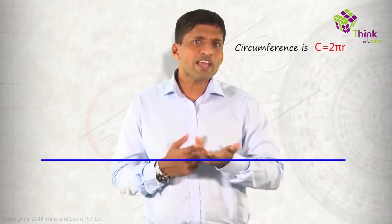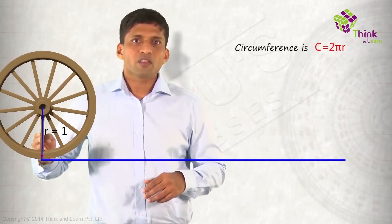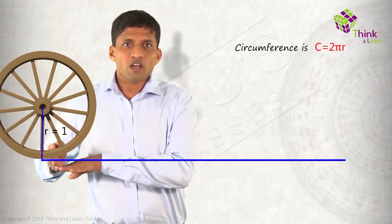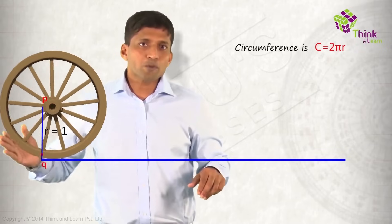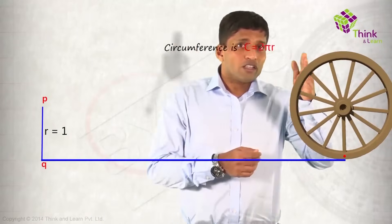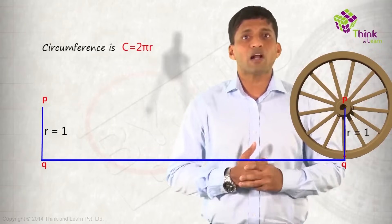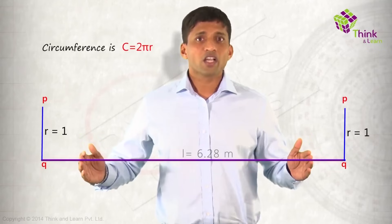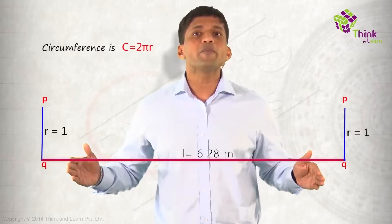Another interesting way to visualize this: take a circular wheel with radius 1. If this radius PQ is perpendicular to the ground, just push the wheel so it rotates. By the time it completes one rotation — where PQ is back at the same position, 90 degrees with the ground — if you measure that distance, it will be 6.28 times 1, so 6.28 meters. That's how we can visualize the circumference.